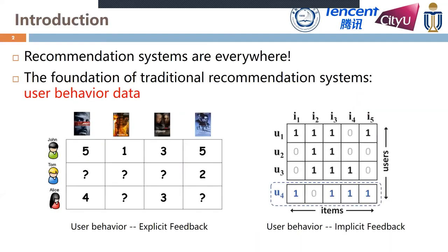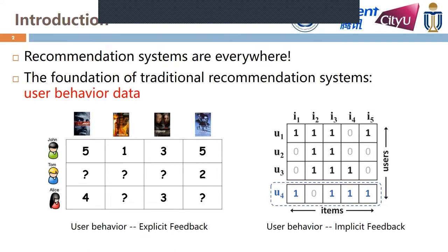In the era of information explosion, personalized recommendation systems have become a crucial component in user-oriented services. Usually, modern recommendation systems exploit user behavior data to infer user preference — for example, rating scores in explicit feedback, click records in implicit feedback — and various machine learning techniques can be used, such as matrix factorization, deep learning-based models, and so on.